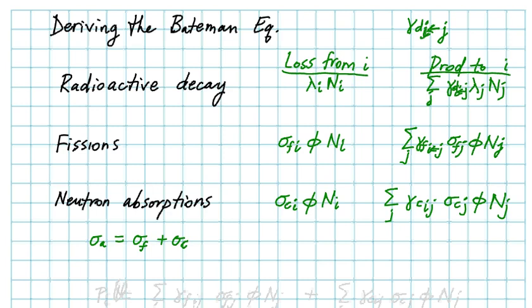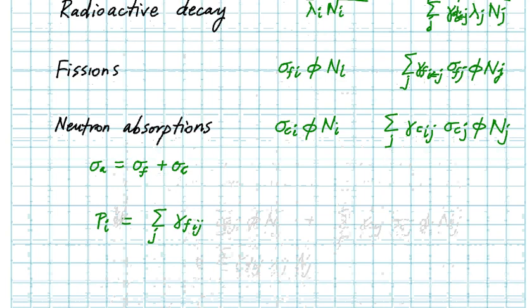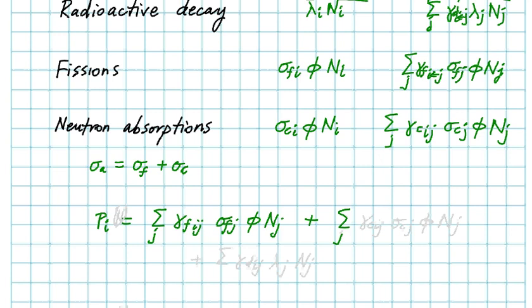Basically we're going to rewrite these six terms in one equation. We'll keep them as the production and the losses. The production of nuclide i will have all the summation terms here: sum over j, the fission yield Y_ij, fission cross-section sigma_f j, flux, N_j. That was the fission. Have the capture next: sigma_c j, flux, N_j, plus the decay: gamma_d i j, lambda_j, N_j. So that's the production side.